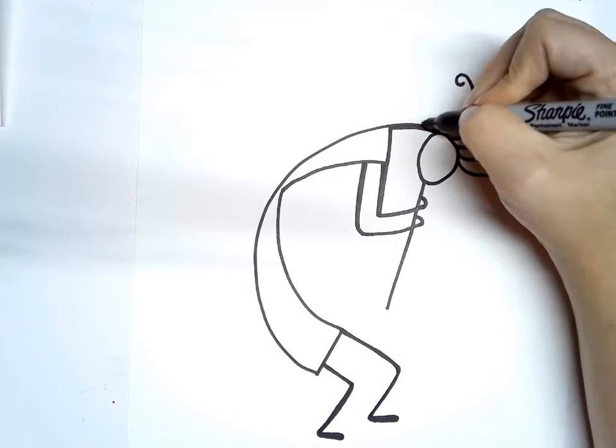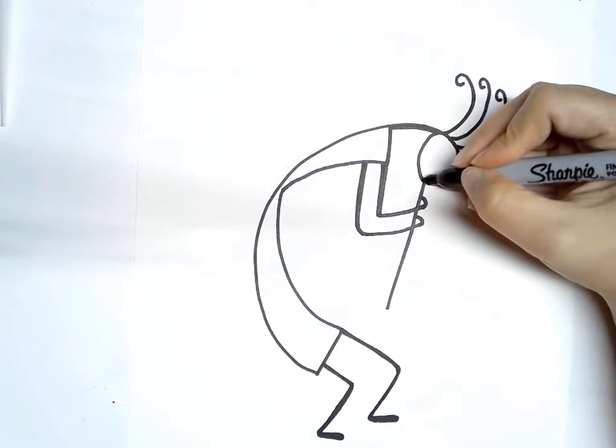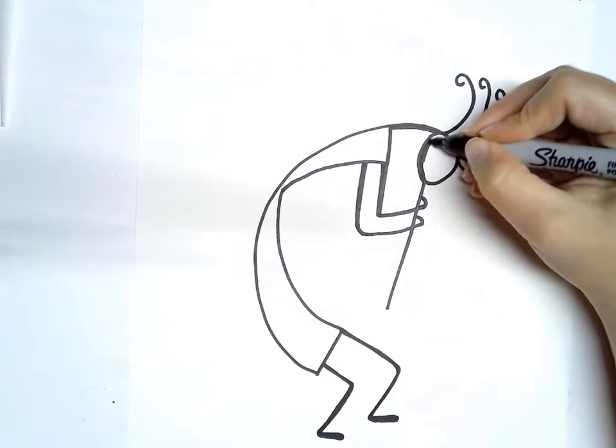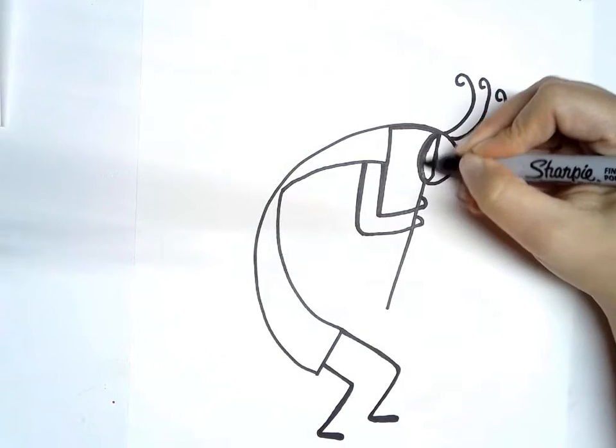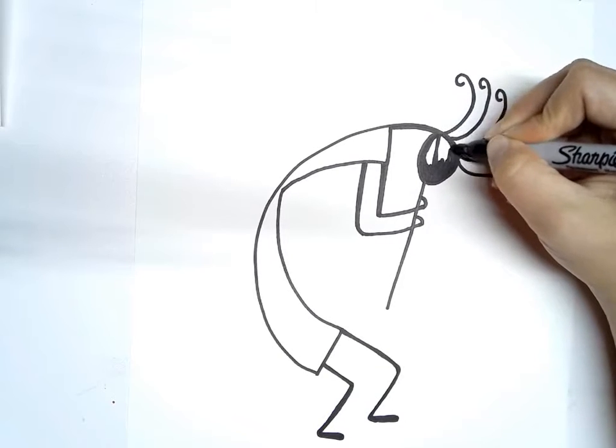And then you're just going to color in the head and the body so that the head and the body are black. So you can just take your marker and color that in, and you will be done making your flute player.